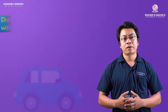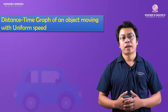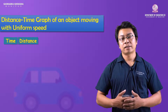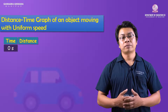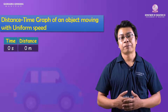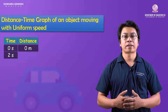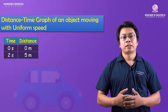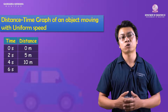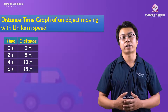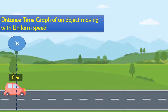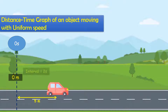This is a distance-time graph of an object moving with uniform speed. For example, we have time and distance. At time 0 seconds, distance is 0 meters. At time 2 seconds, distance traveled is 5 meters. At time 4 seconds, distance is 10 meters. At time 6 seconds, distance is 15 meters. Equal intervals of time have 5 meters of distance.